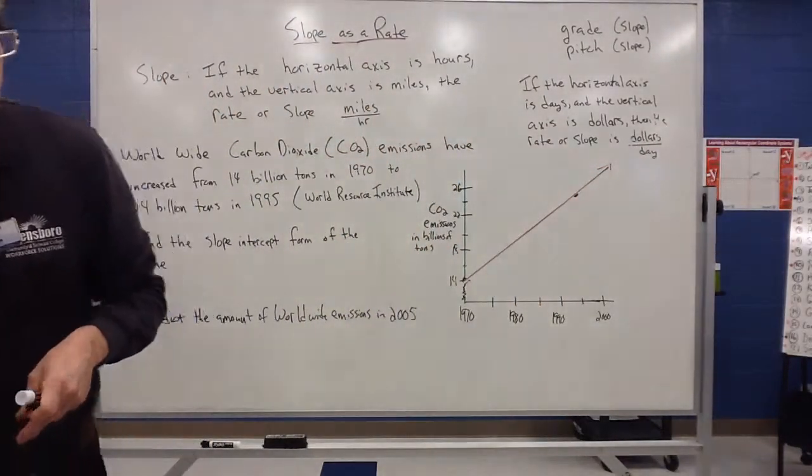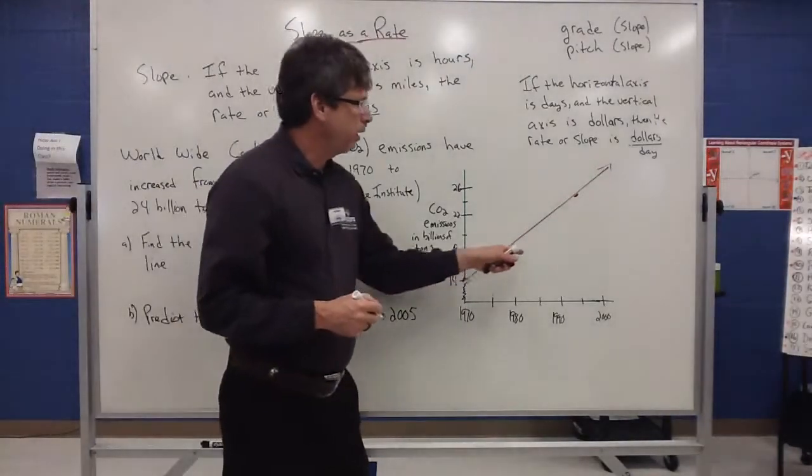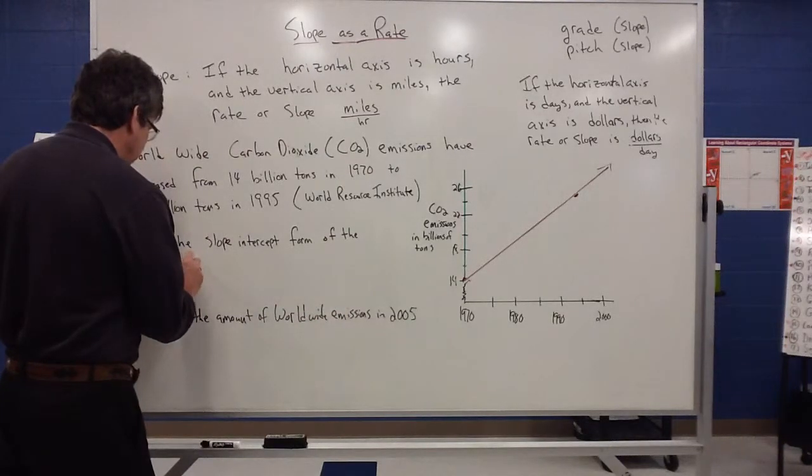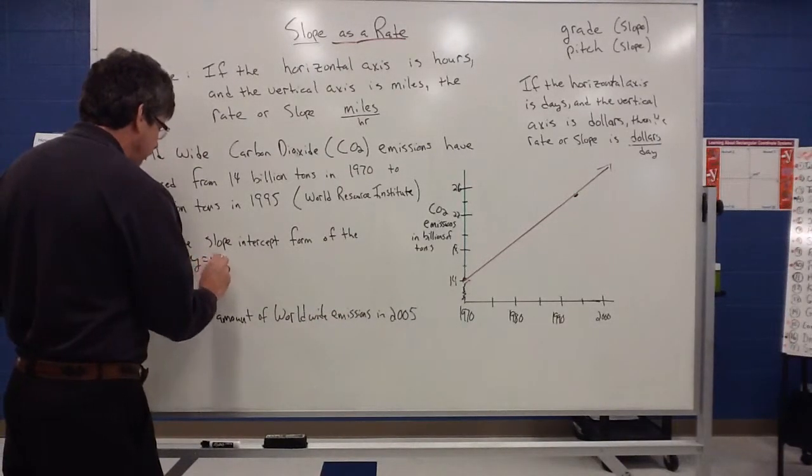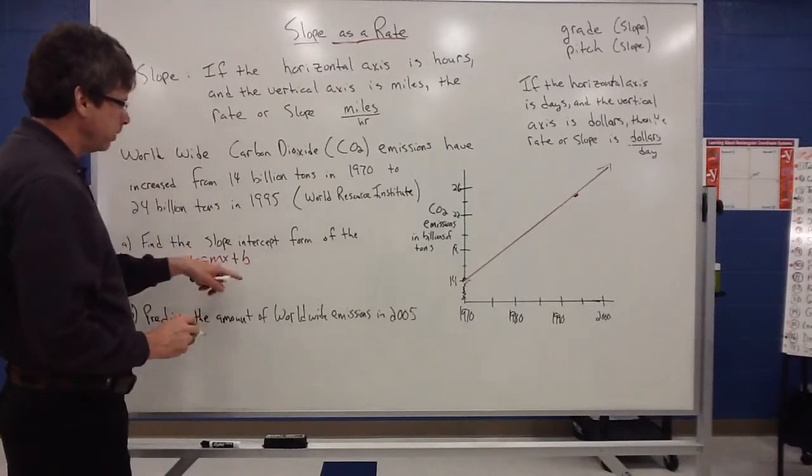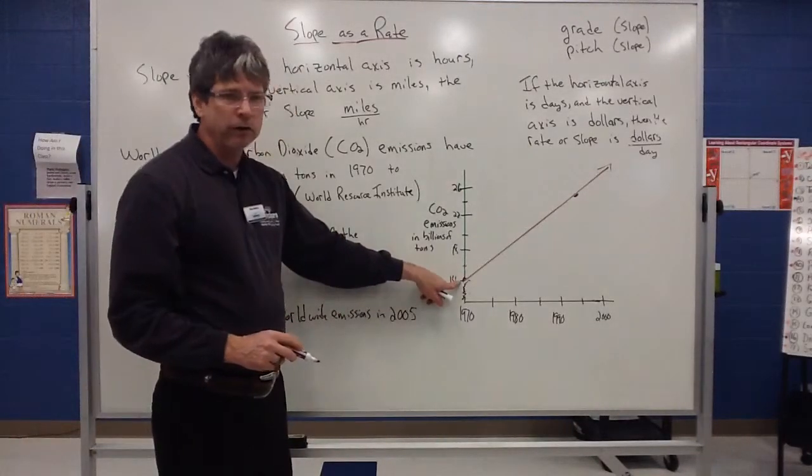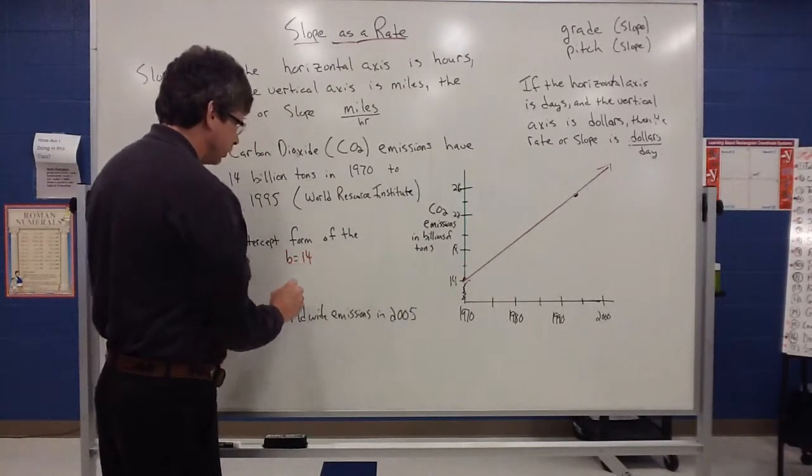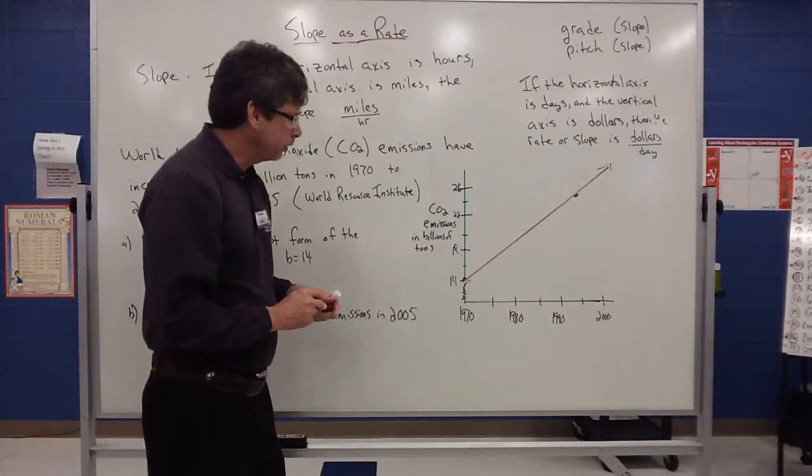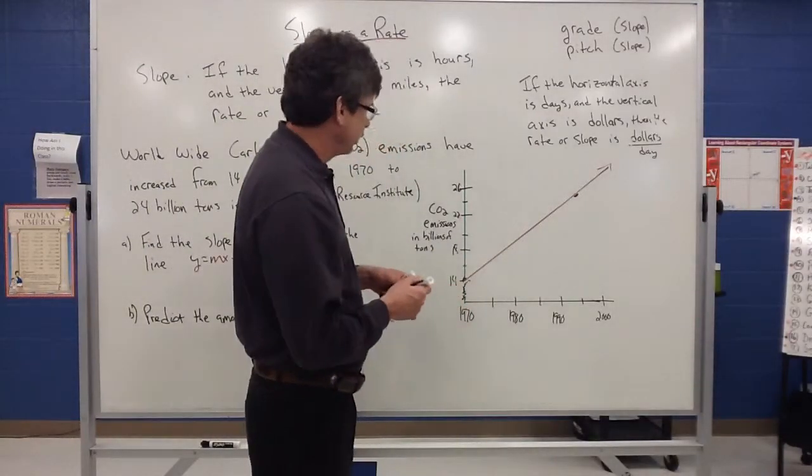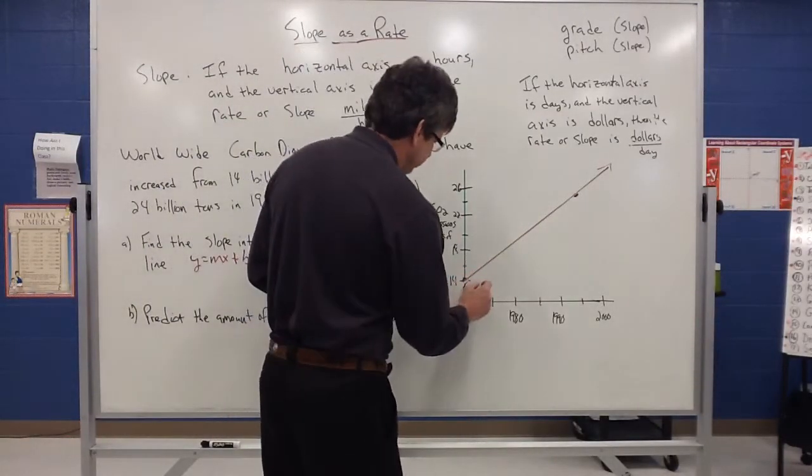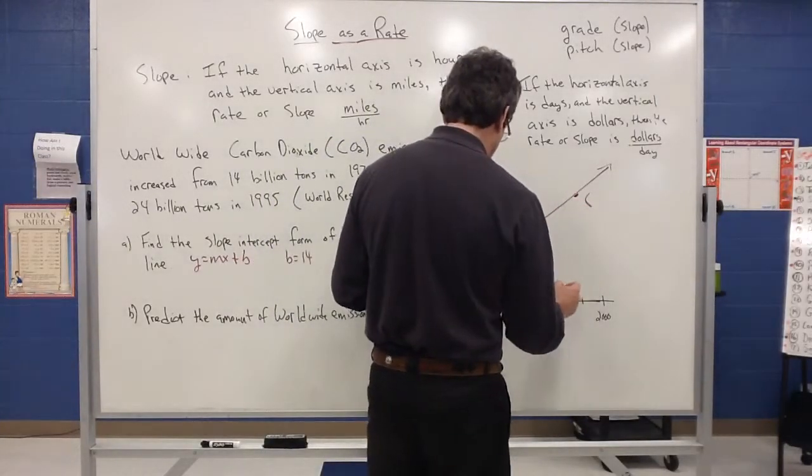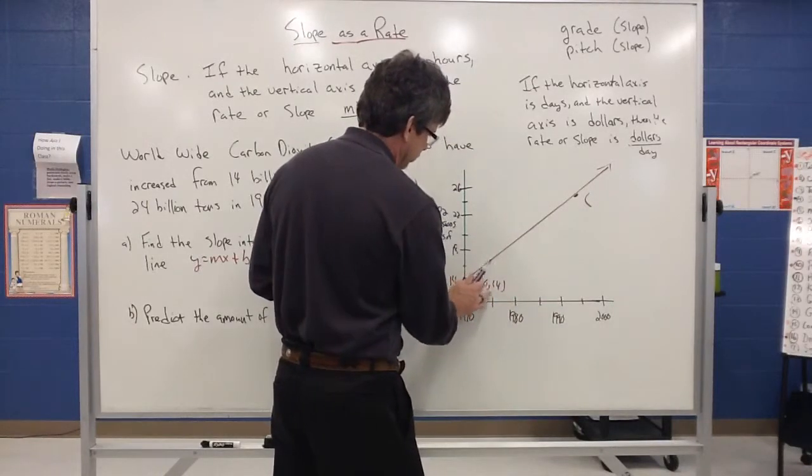What I want to do in our problem is we want to write an equation for this line. Now remember slope intercept form is y equals mx plus b, where m is the slope and b is the y-intercept. It's pretty clear that it crosses at 14. So right now I can pick up that b is equal to 14. Now to determine my slope though, I need to find my rise and run. So we know that this is 0, 14. And this was, actually, that was 1970, 14 for us.